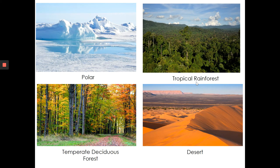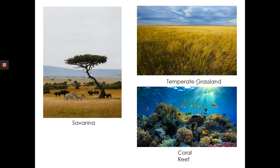If we look at some pictures to represent our ecosystems, we've got our polar regions, our tropical rainforest, and our temperate deciduous forest. A deciduous forest is a forest that will lose its leaves — you can see on the picture leaves that are green and changing to yellow and orange colours before they drop to the floor. Additionally, we have a savannah, usually found at the edge of our deserts, temperate grasses, and coral reefs.